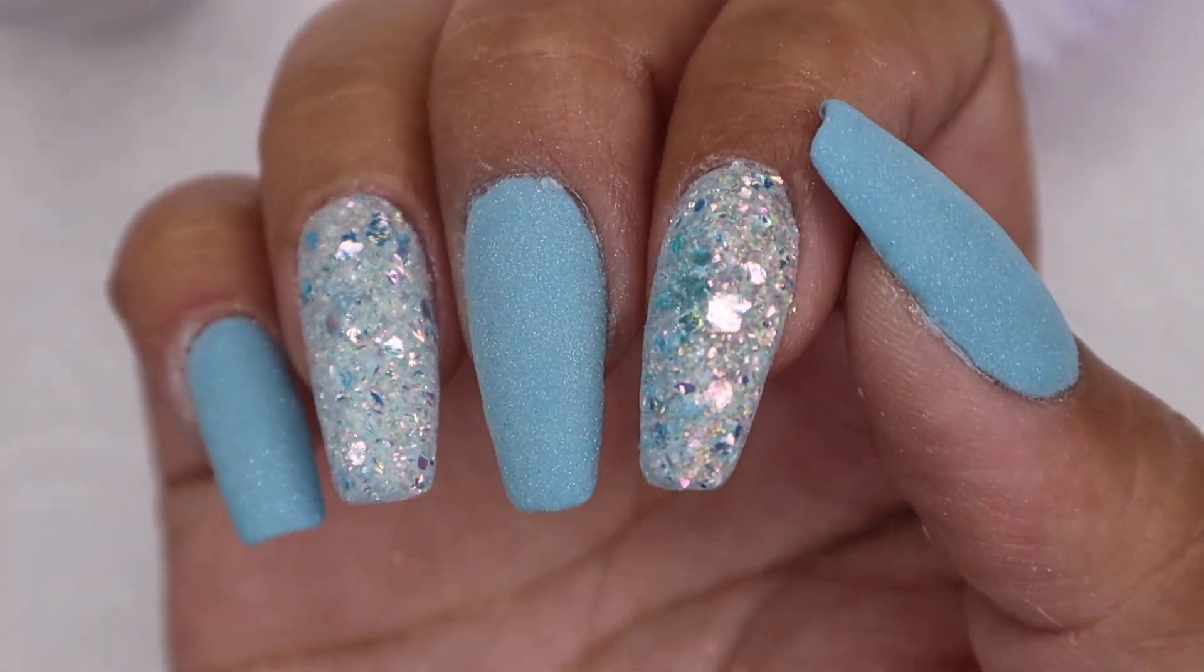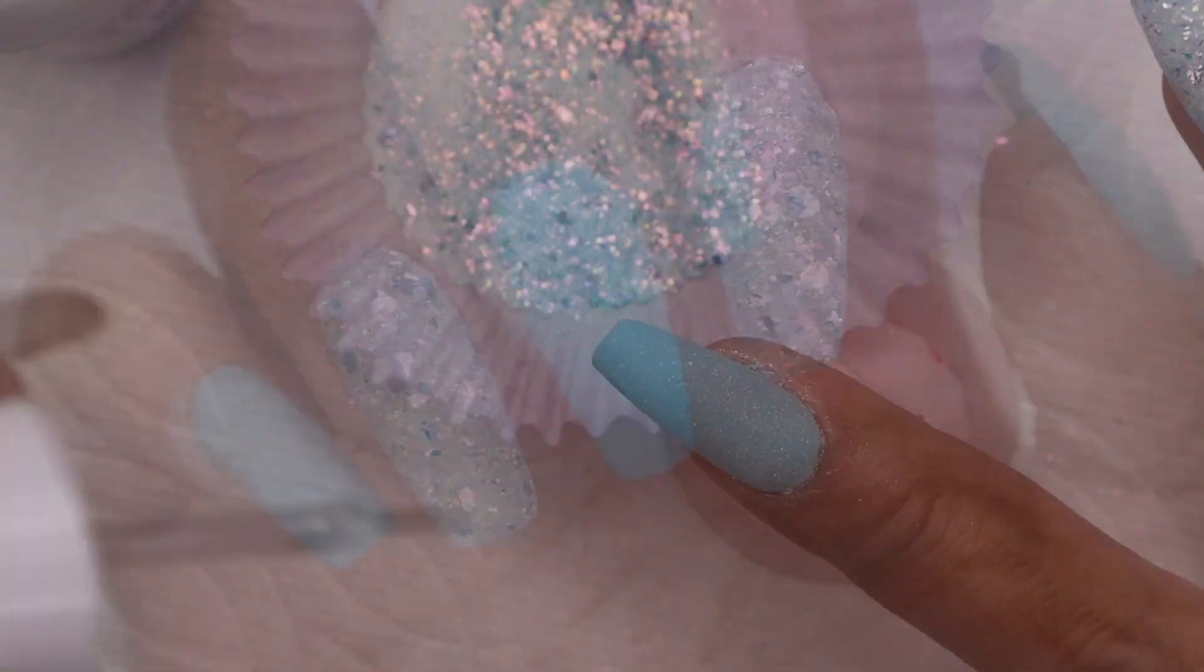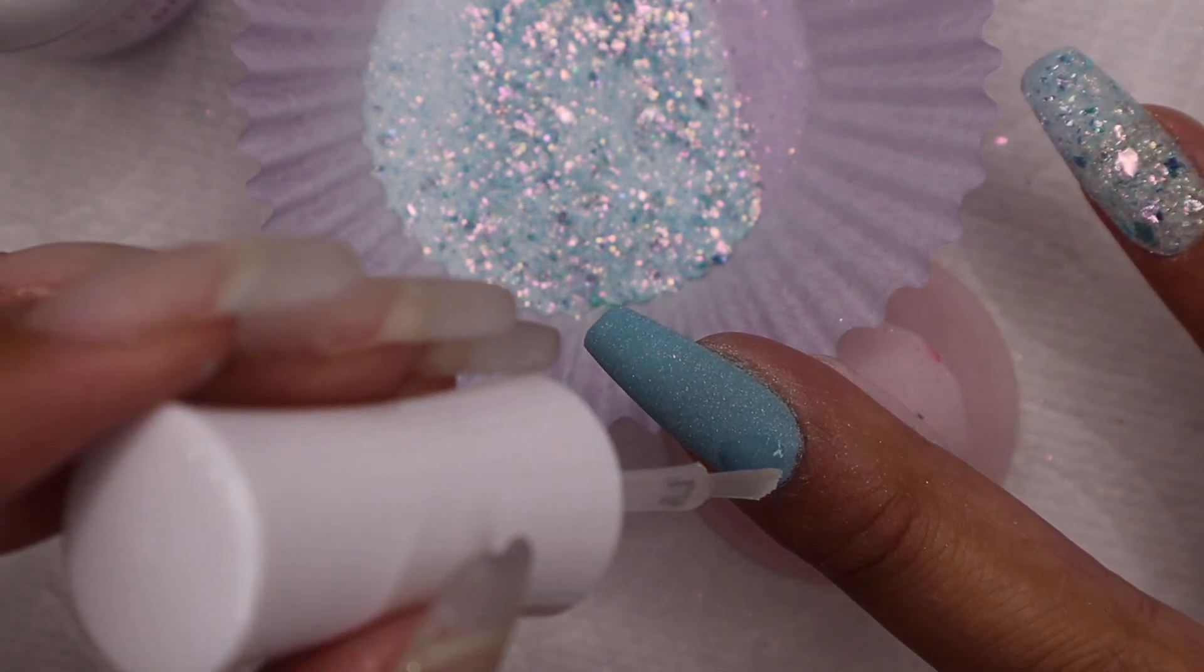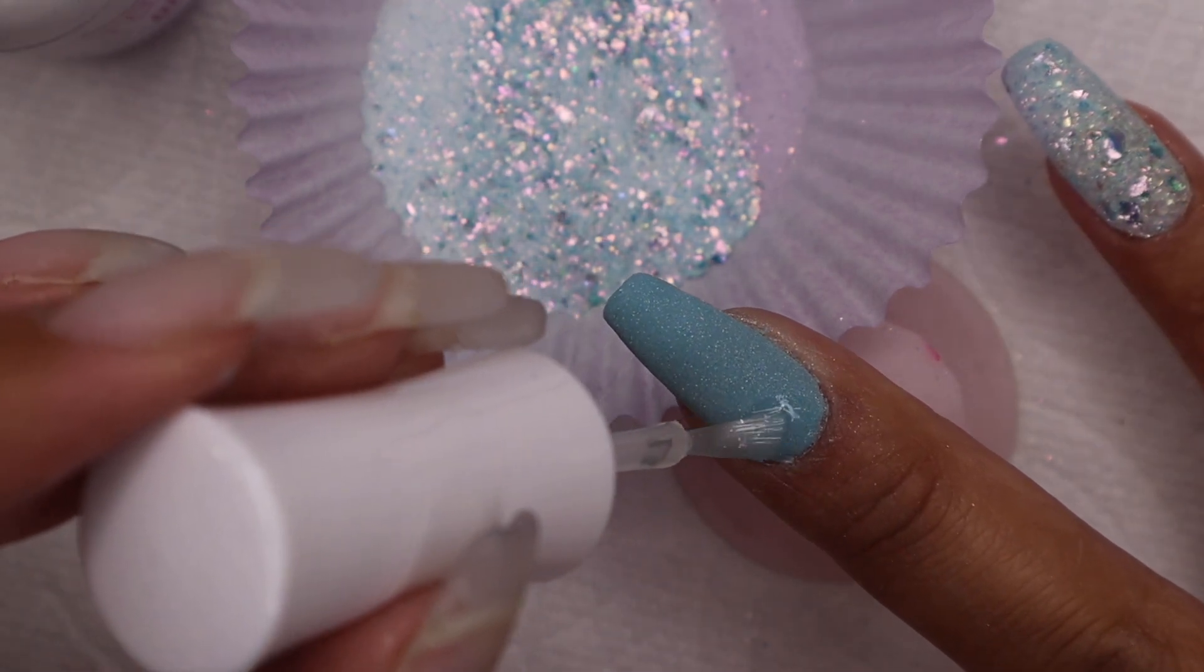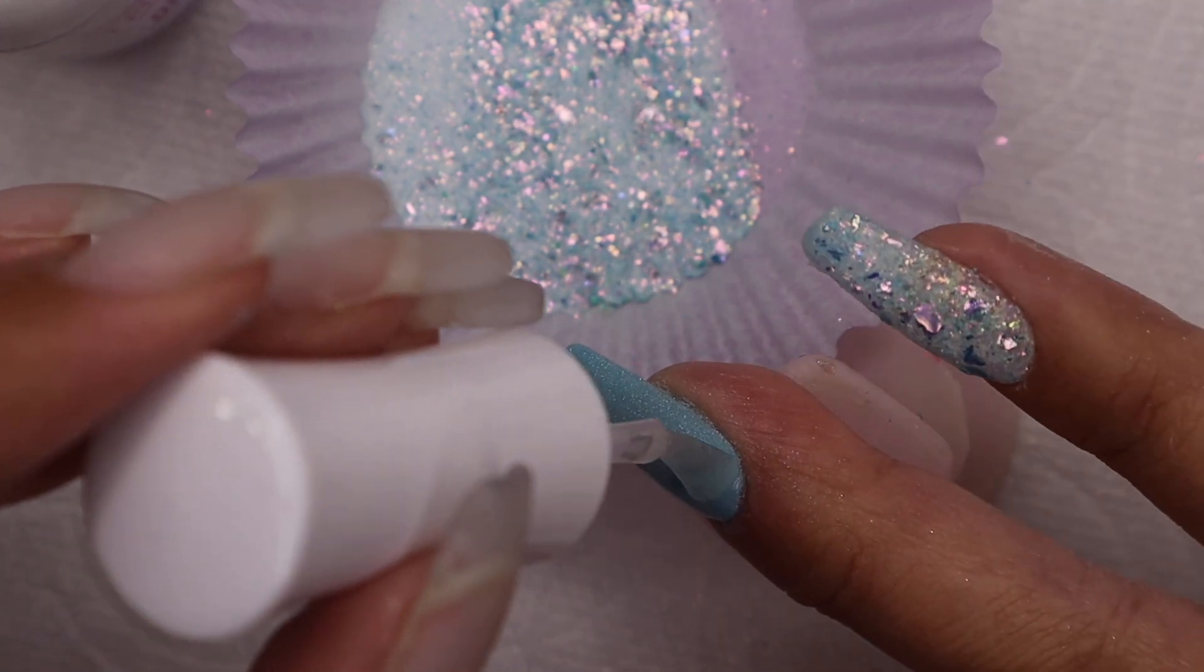For my middle finger, I want to do some ombre of the flakes. I'm just going to apply some dip base on the half part of my nails. Then using an eyeshadow brush, I am going to sprinkle on some of those flakes.